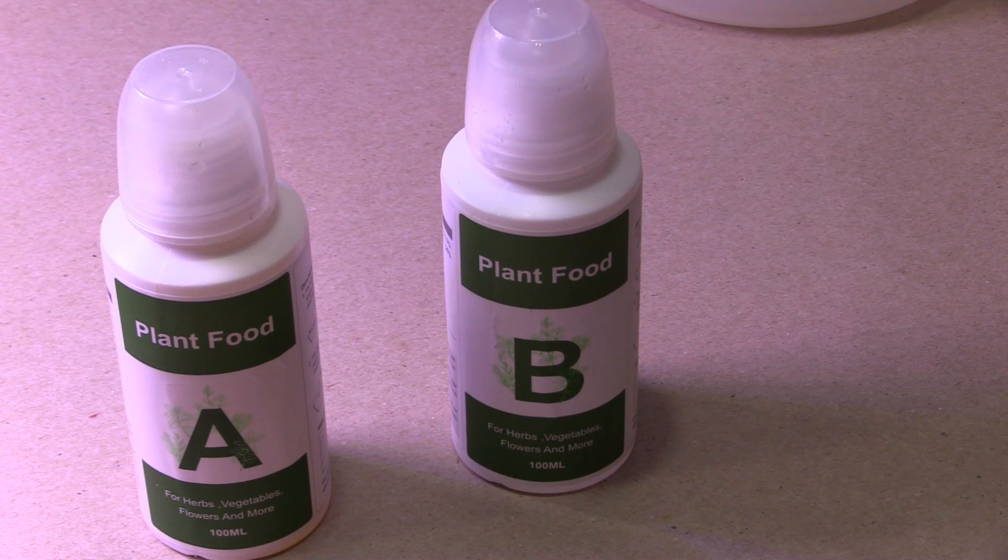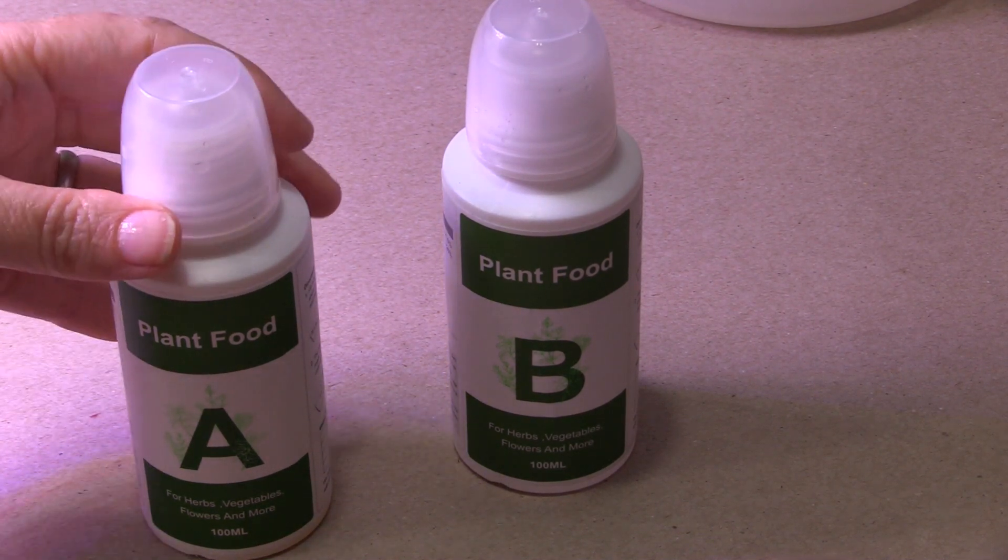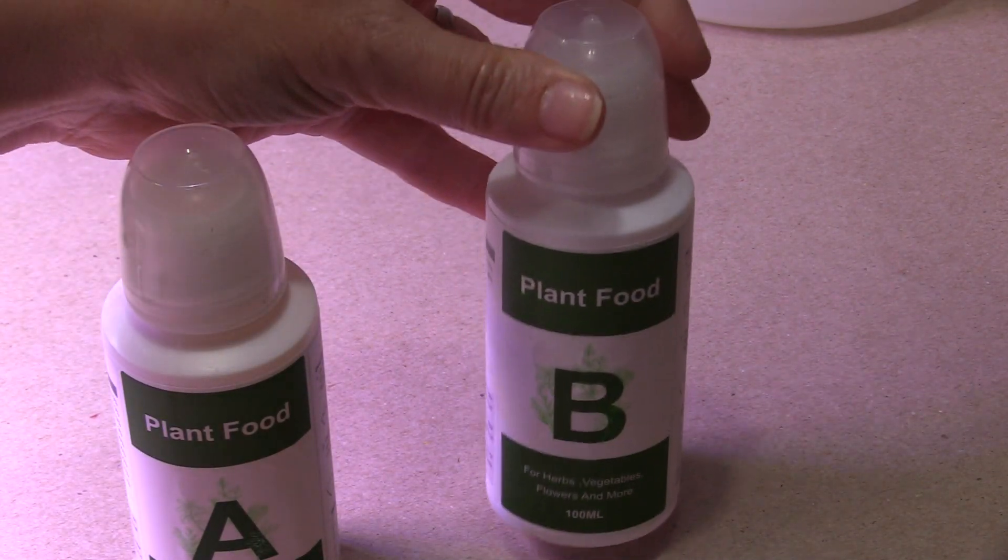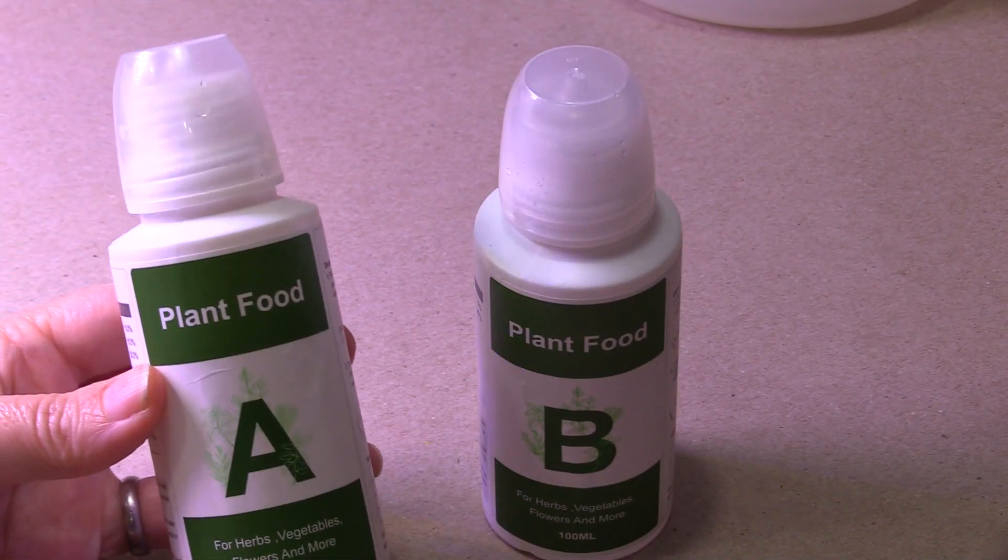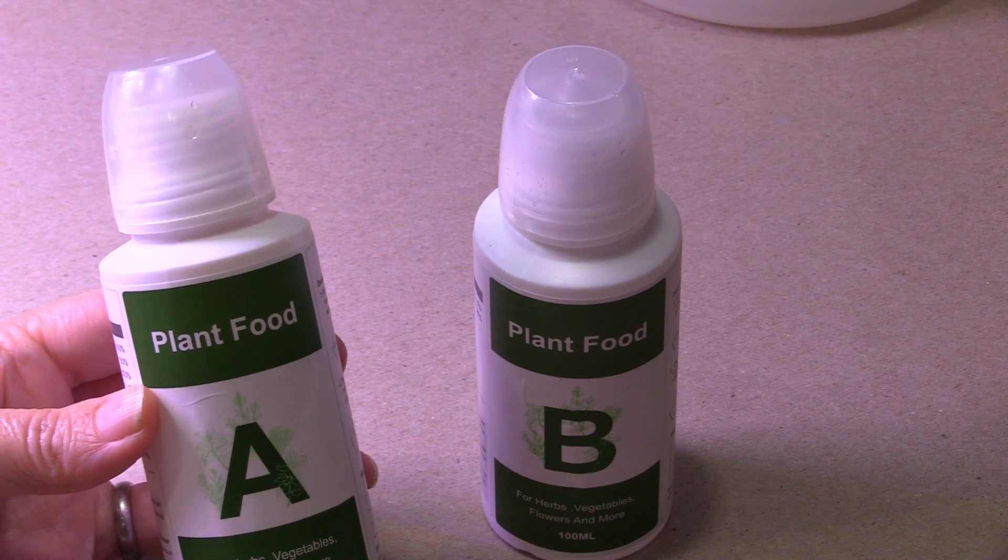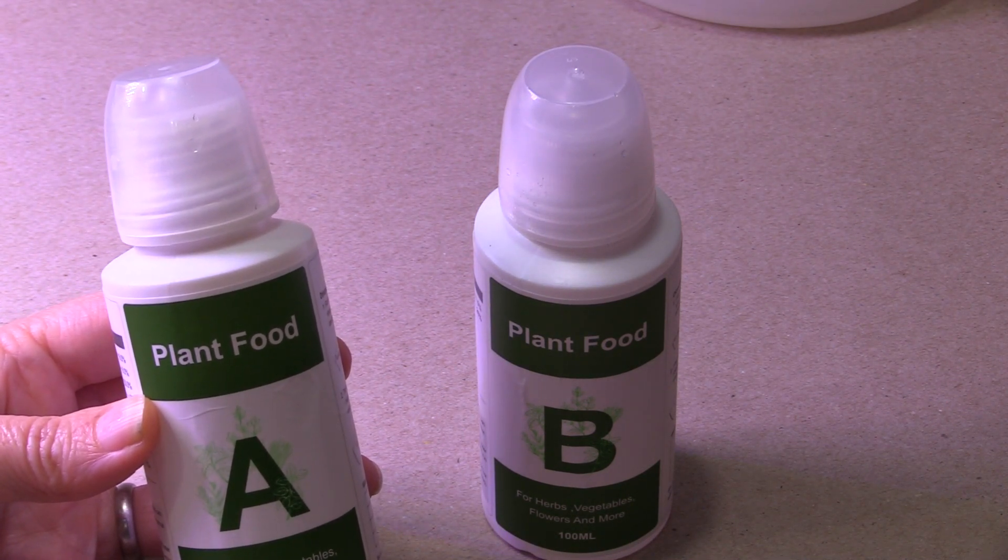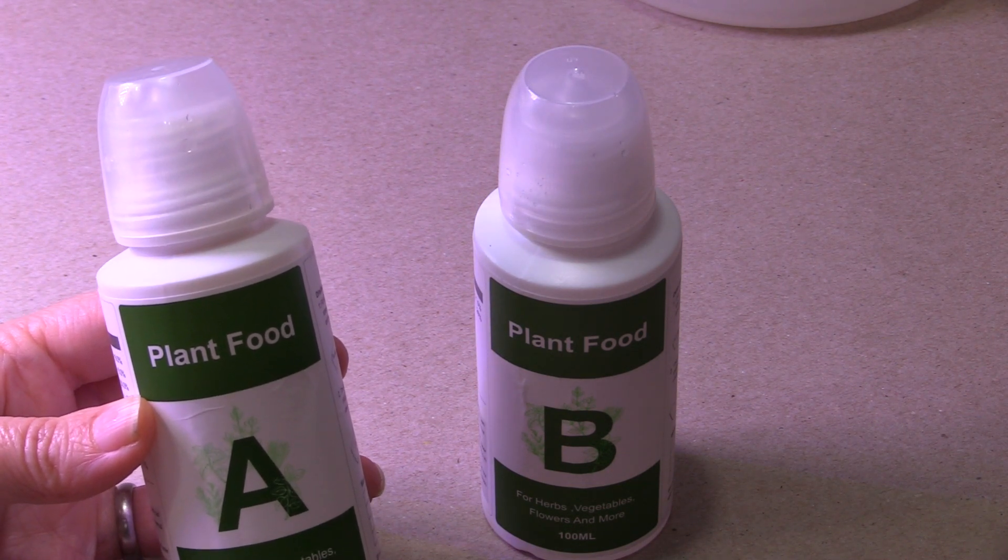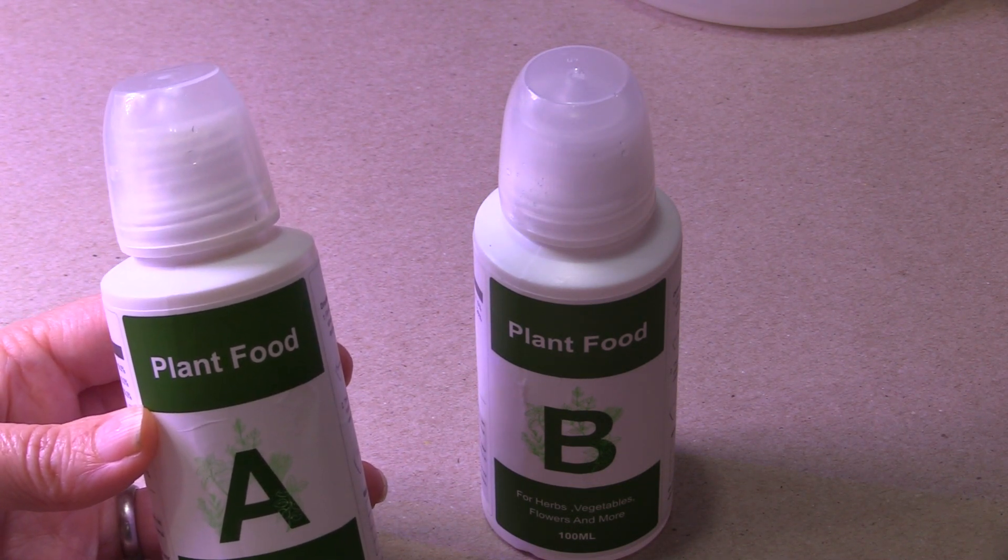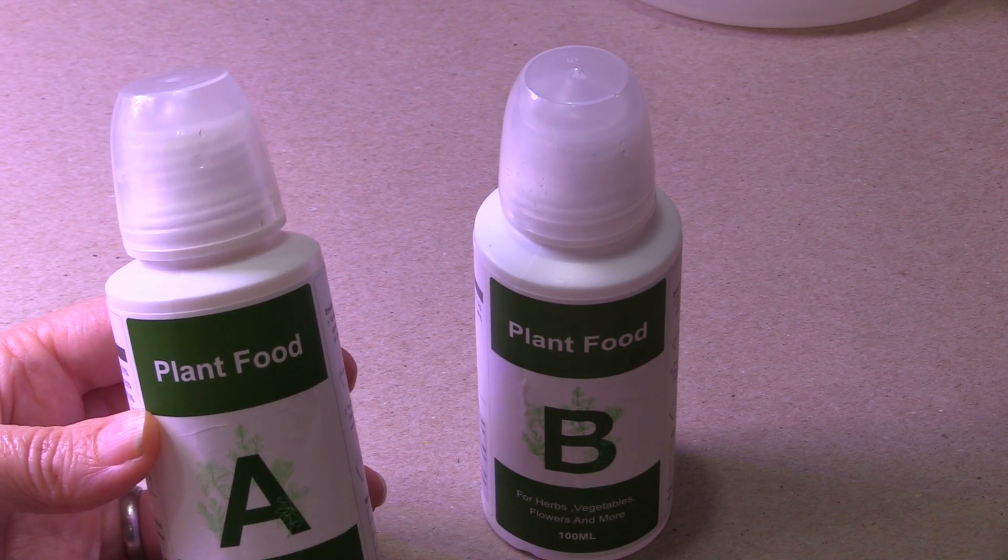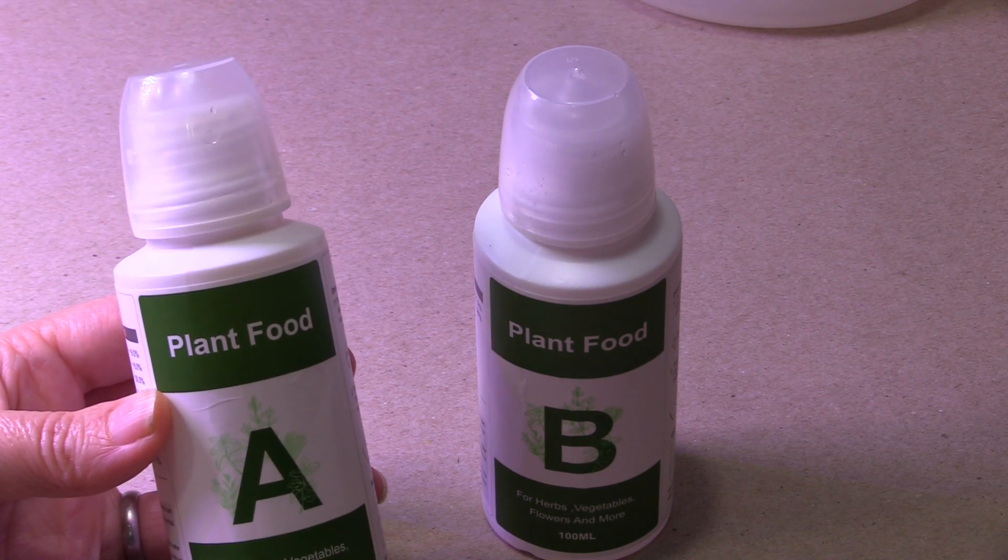Now it's time to get our water mixed up. So you're going to take your two plant foods. You have plant food A and plant food B and you're going to unseal the bottles and if you shake them around you'll hear that there's some little pellets in there. Those are the chemicals that are going to control the pH and the nutrients in the water. You want to peel back the seal and fill the jars with water and then mix them well.